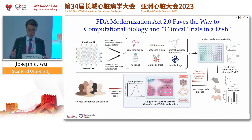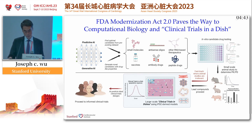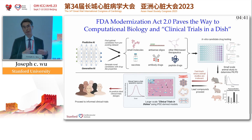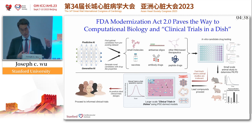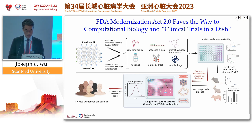Once you confirm the hits, before you move to a clinical trial, you probably want to test it on a panel of, say, 200 to 300 patients using iPSC cardiomyocytes, or organoids, or microphysiological systems, depending on what your area of interest or expertise is.